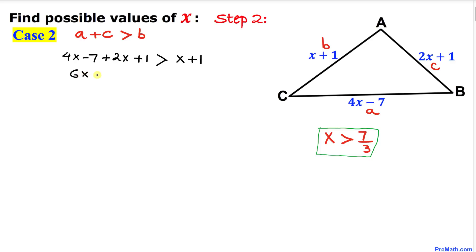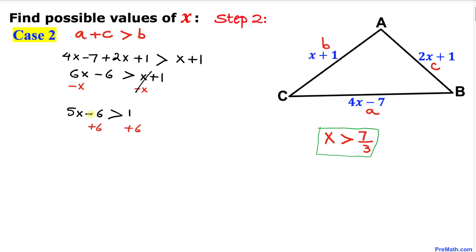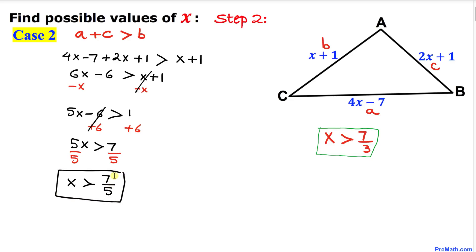Combining like terms on the left-hand side: 4x and 2x gives us 6x minus 6 is greater than x plus 1. Subtracting x from both sides gives 5x minus 6 is greater than 1. Adding 6 on both sides gives 5x is greater than 7. Dividing both sides by 5, we get x is greater than 7 fifths. That is another solution.